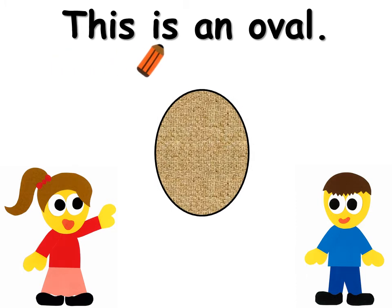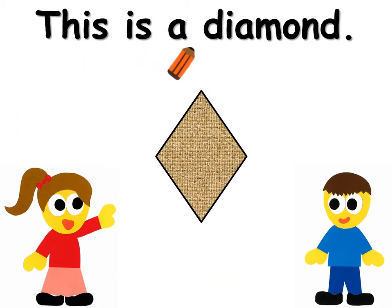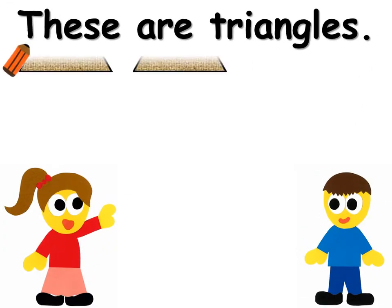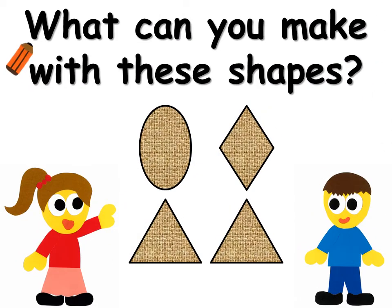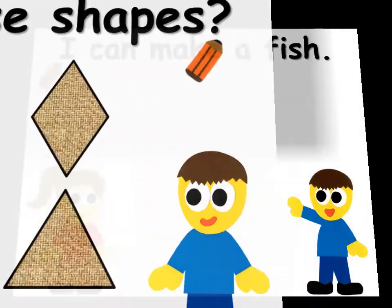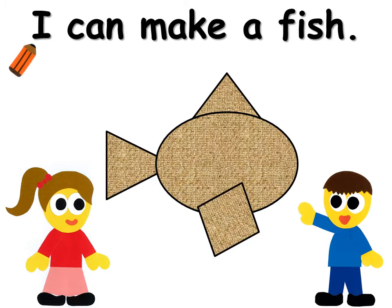This is an oval. This is a diamond. These are triangles. What can you make with these shapes? I can make a fish.